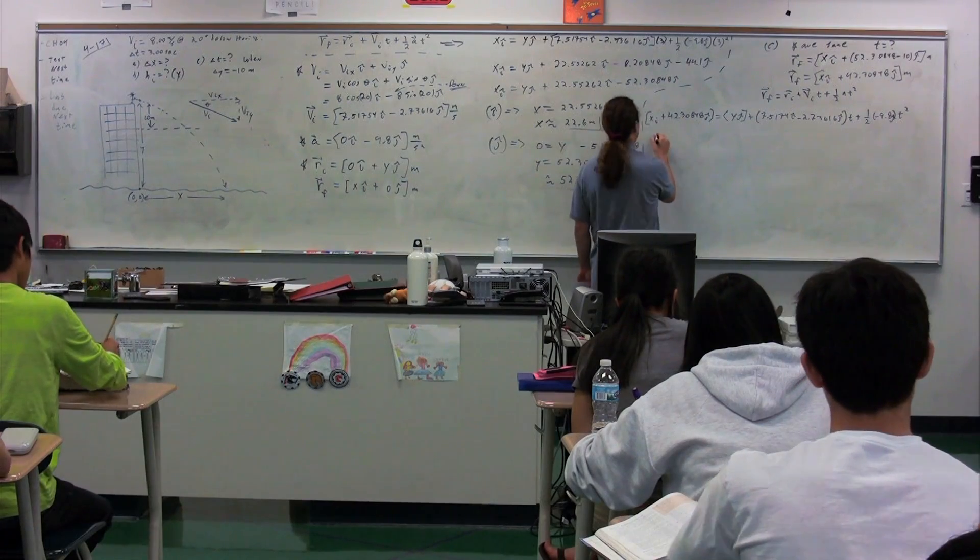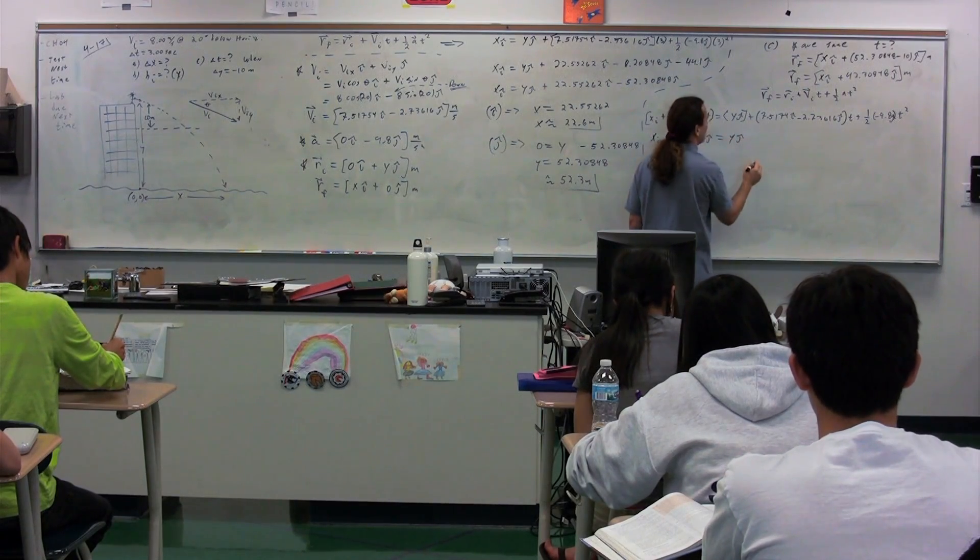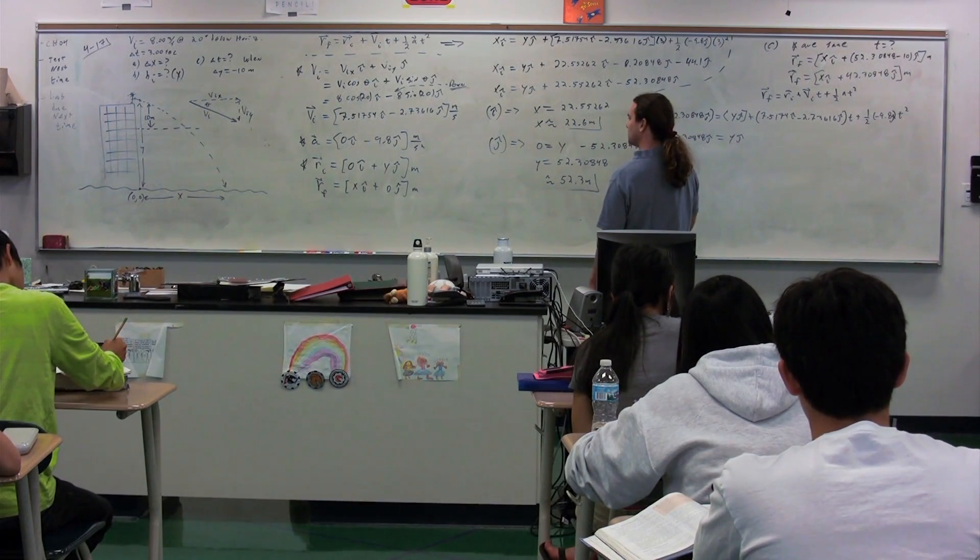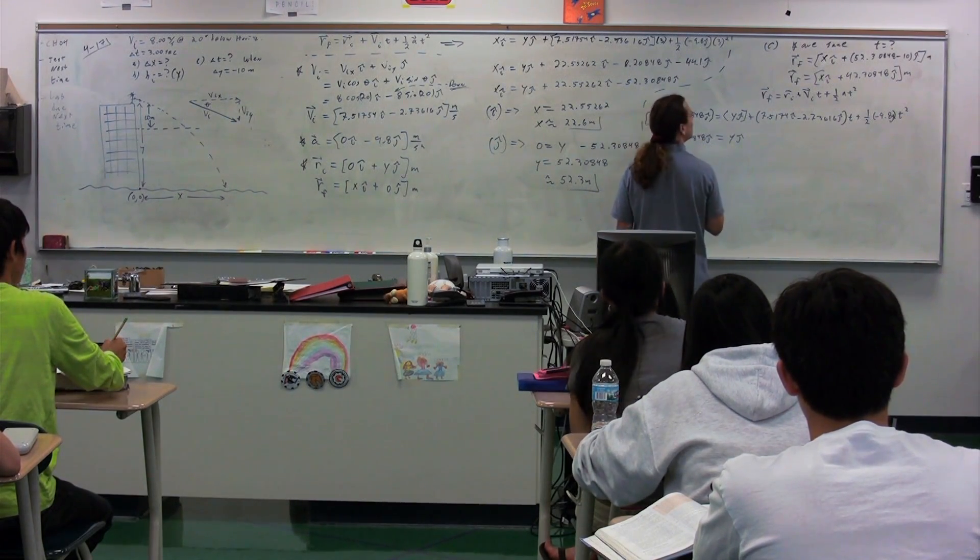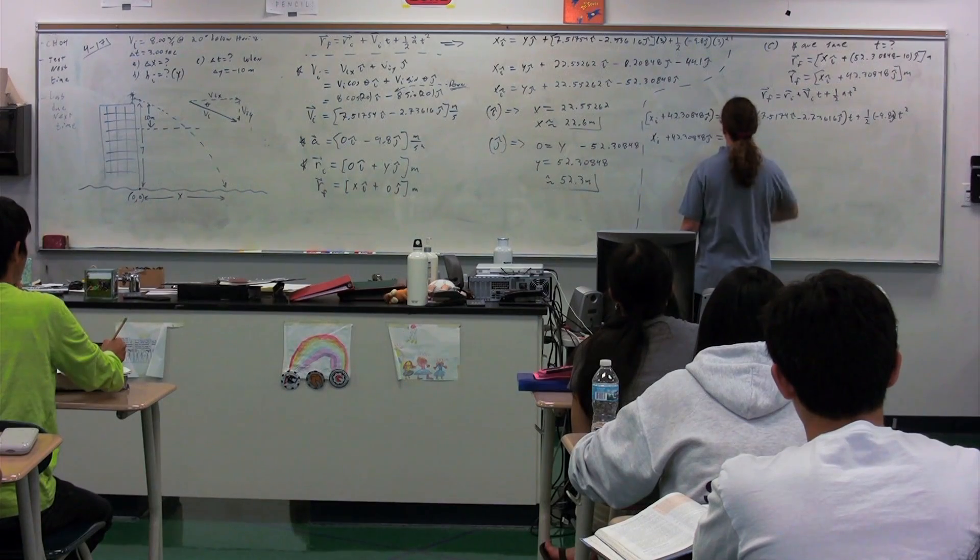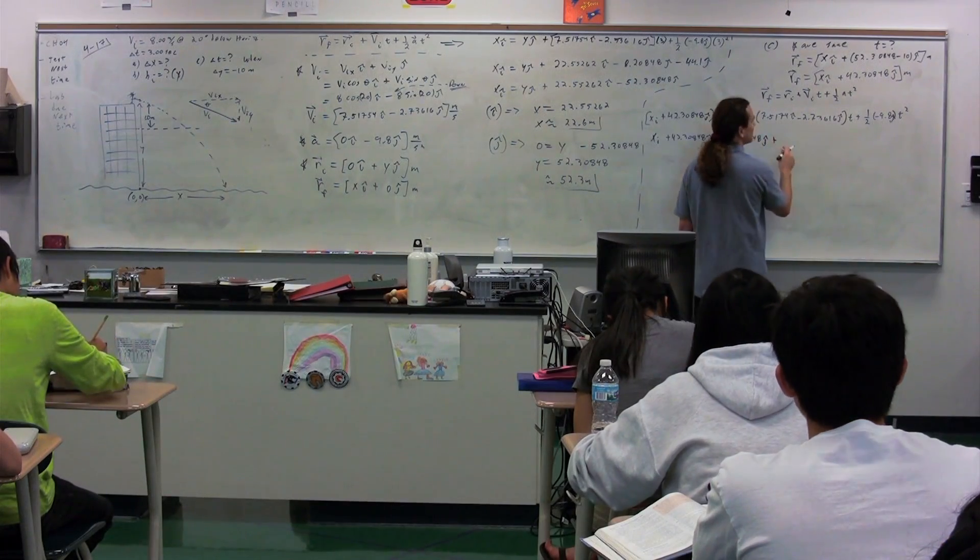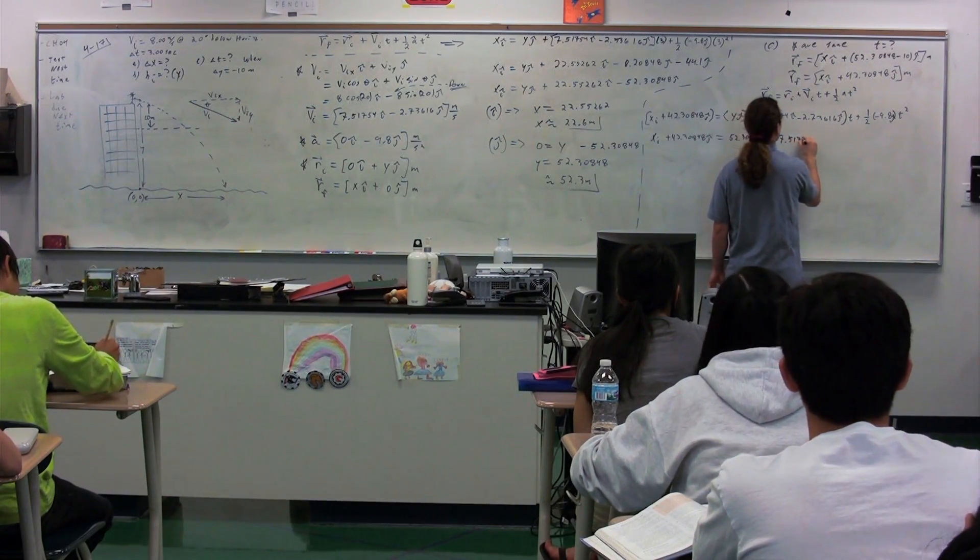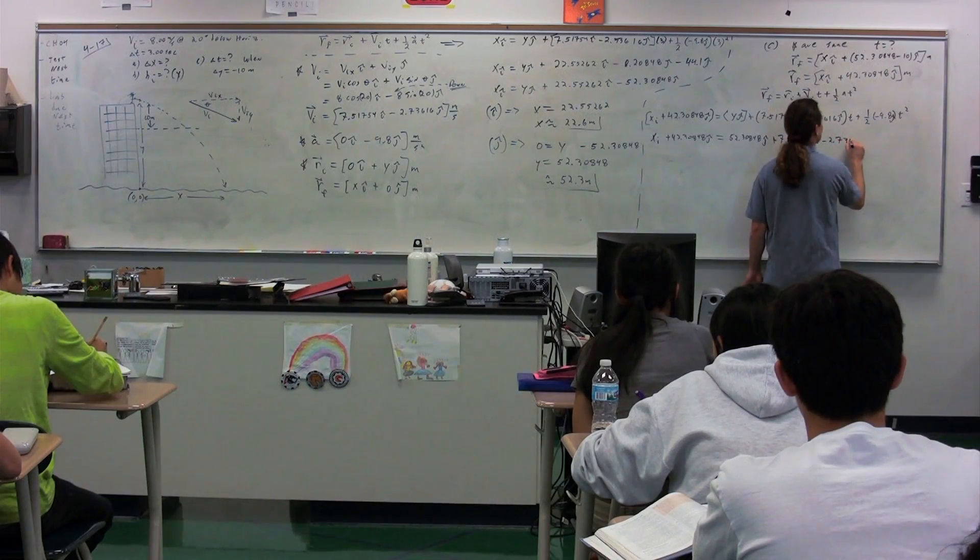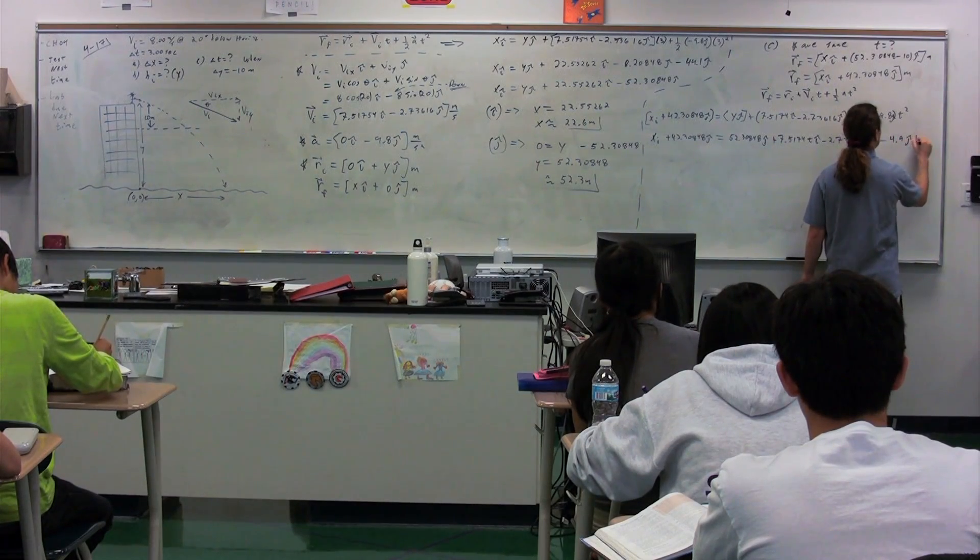So xi plus 42.30848j is equal to yj plus velocity initial, which was the 7.5174i minus 2.73616j, all of that multiplied by t plus our one-half times our negative 9.8 times t squared. This needs a j in there. Alright, so this is not quite the same. Because we know y is the 52.30848j, plus we multiply by t, 7.5174t times i, minus 2.73616t times j, minus 4.9jt squared.